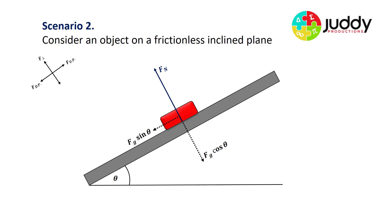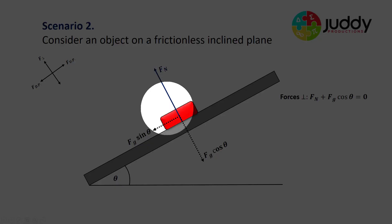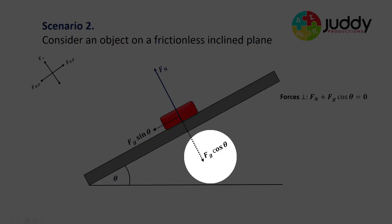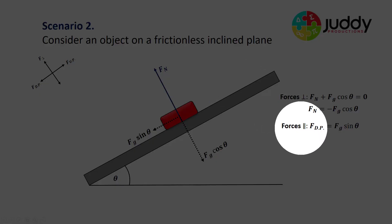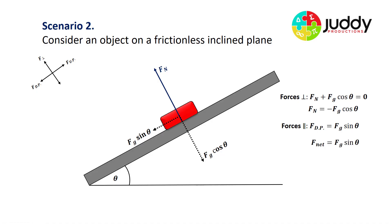This is a true indication of the forces occurring on the object, both parallel and perpendicular to the plane. Considering the forces perpendicular to the plane, the normal reaction force is equal and opposite to the weight component perpendicular to the plane, Fg cos theta, so their sum is zero. For forces parallel to the plane, Fg sin theta is the only force acting parallel to the plane, acting down the plane. This is therefore the net force — Fg sin theta.